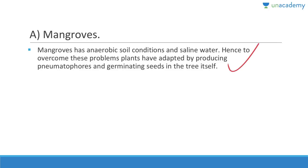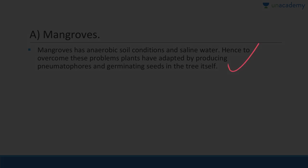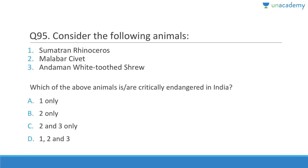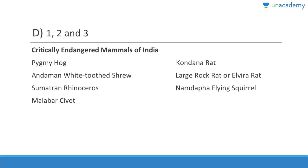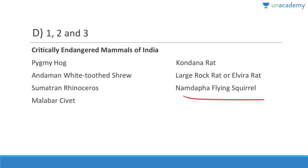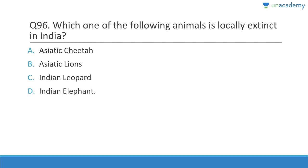Question 95: Sumatran rhinoceros, Malabar civet, and Andaman white-toothed shrew are all critically endangered — answer is all three. Other critically endangered species include pygmy hog, Kondana rat, large rock rat (Elvira rat), Namdapha flying squirrel.